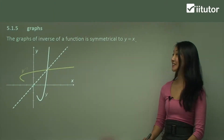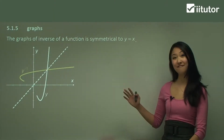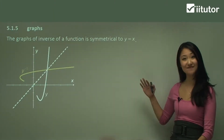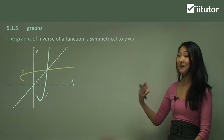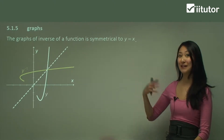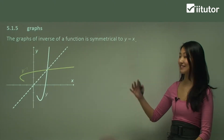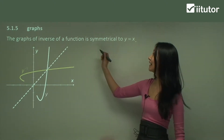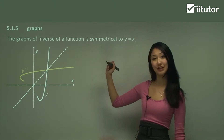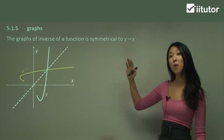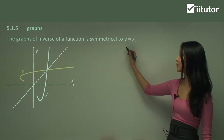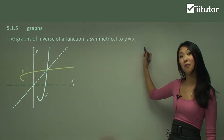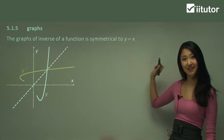Let's now focus on the graphing of the inverse of a function. So I alluded to this in the previous questions a little bit, which is that the graphs of the inverse of a function is always symmetrical to this line here, y equals to x.